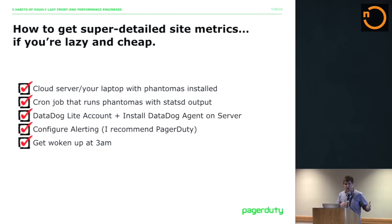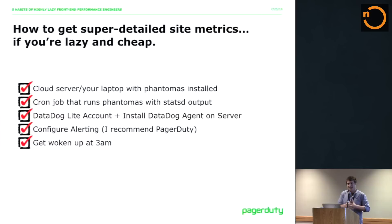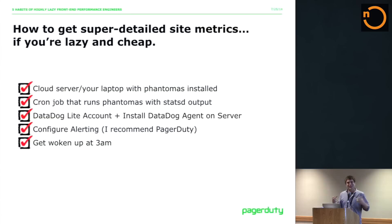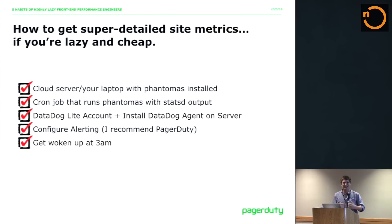There are obviously commercial tools that do this as well — New Relic is one of the best known ones. But it's also very easy just to do this on your own for free. You spin up a cloud server, or even your laptop, with a cron job that runs Phantomas at some interval. I'm using Datadog as my dashboard tool, my metrics aggregator, to see these trends over time. Then you can configure alerting, so when something bad happens — when your errors start to jump after a deploy or in the middle of the night — you can actually get an alert that your front-end metrics have gone south. Then that leads to the last point: you can get woken up at 3am just like your operations team.